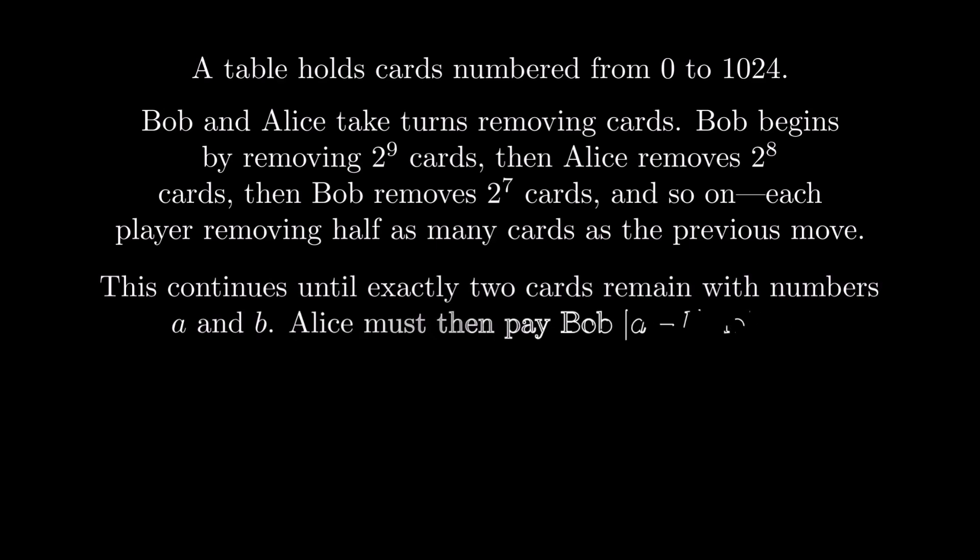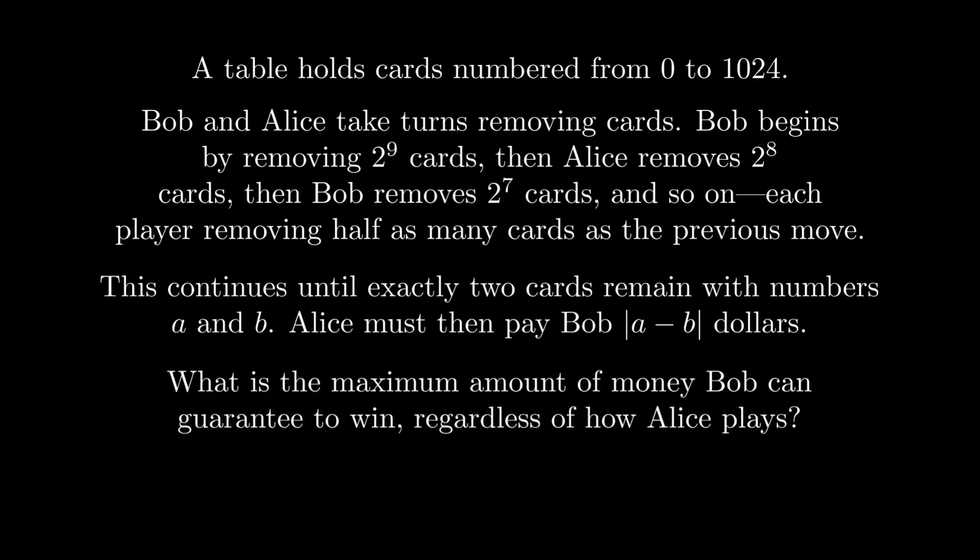This continues until exactly 2 cards remain, with numbers A and B. At the end, Alice must pay Bob the absolute value of the difference between A and B. What is the maximum amount Bob can guarantee he wins, regardless of how Alice plays? Try to solve it on your own.